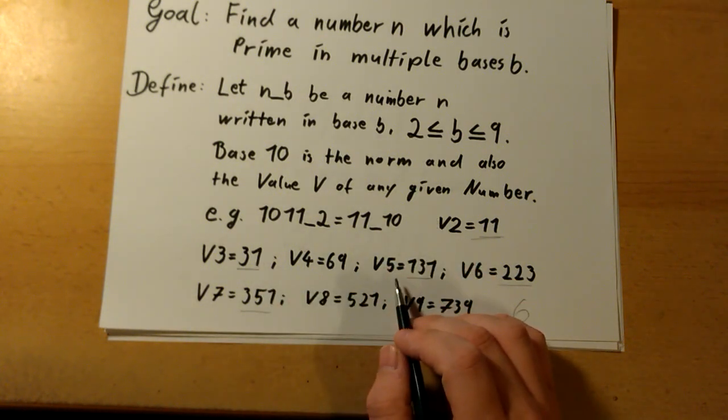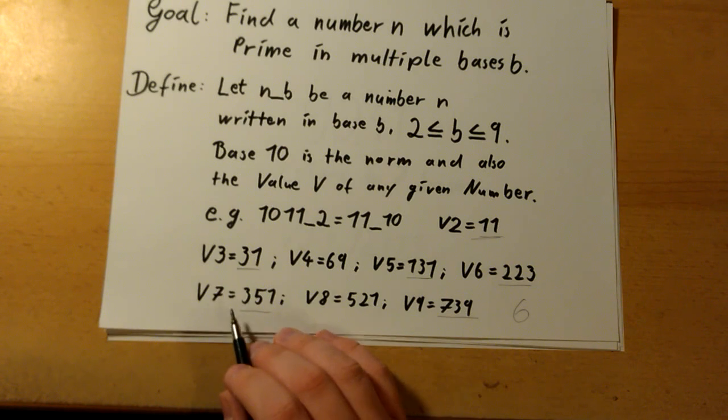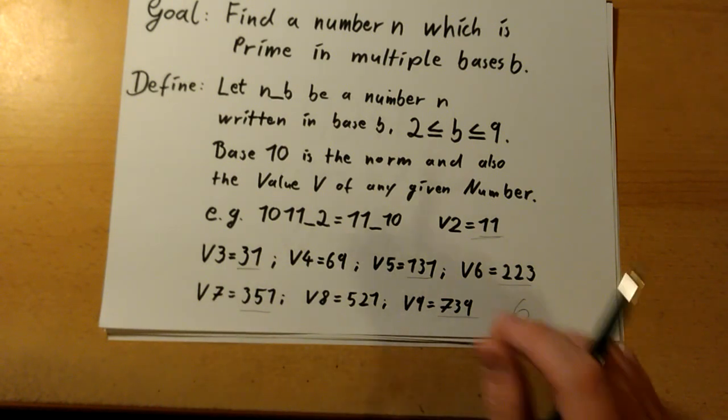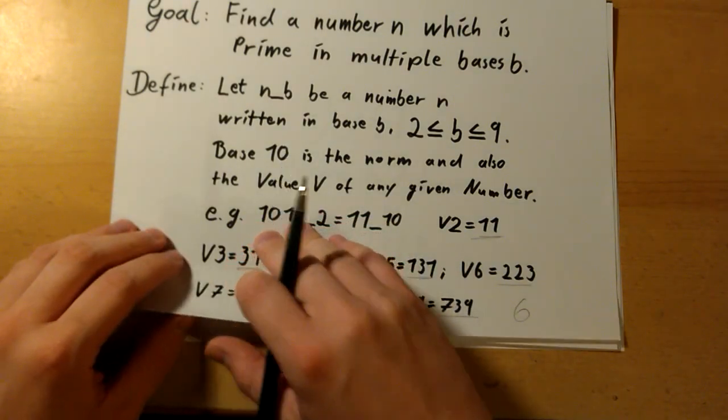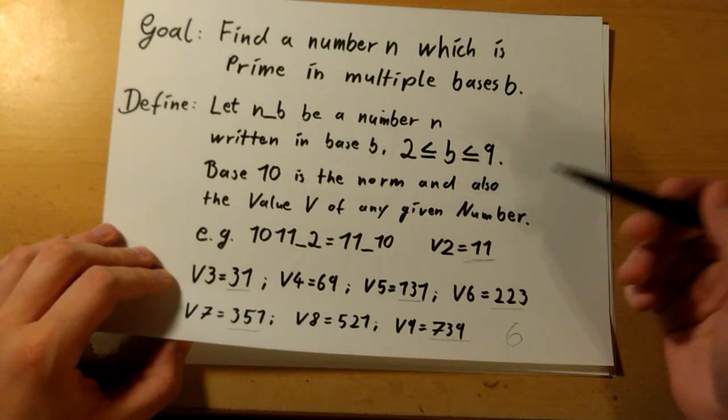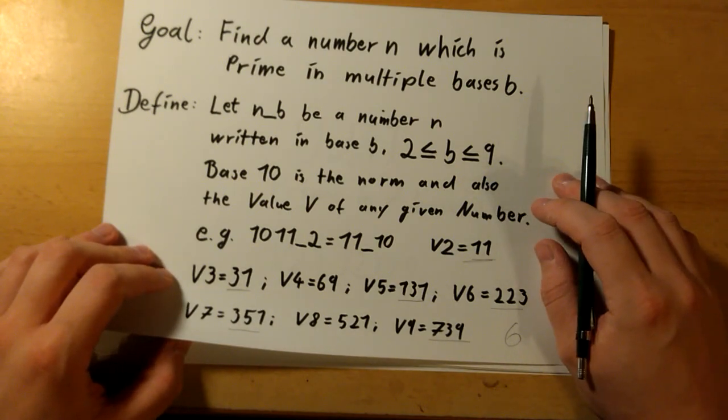In base 5 it's a prime, in base 6 it's a prime, in base 7 it's a prime, and in base 9 it's a prime. So it's prime in six bases. That's nice, but I wanted to find a number which is prime in more than six bases, maybe all nine. That would be nice.